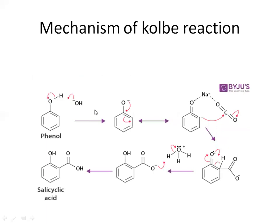The mechanism of the Kolbe reaction: first, we take phenol as our reactant and add potassium or sodium hydroxide. The OH molecule from the sodium or potassium hydroxide reacts with the hydrogen molecule on phenol — it removes that hydrogen, which leaves as a proton (H⁺). This electron pair is given to the oxygen molecule, resulting in a negative charge on oxygen, and we finally get the phenoxide ion.